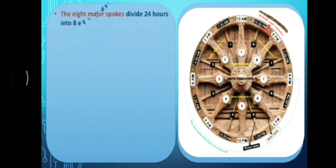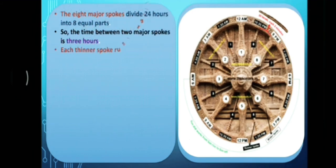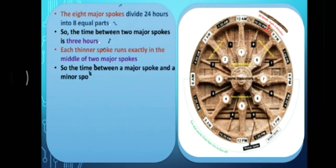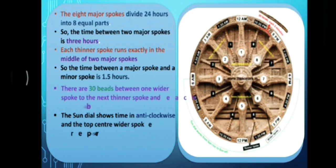The 8 major spokes divide 24 hours into 8 equal parts in the Konark sundial. The time between 2 major spokes is 3 hours. The thinner spoke runs exactly in the middle of 2 major spokes, so the time between a major spoke and a minor spoke is 1.5 hours. The 30 beats between one wider spoke to the next thinner spoke, in which each beat represents 3 minutes. So we can easily find out the time by looking at the sun rays.